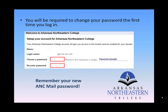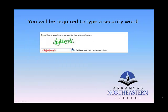Once that information is entered, you will come to the required setup page. To set up your account, you will have to choose your own password. Type the password in the Choose a Password box and also in the Re-Enter Password box. The password must be at least six characters in length. Remember this password because the last six digits of your ID will no longer work after you pass this page. After choosing a password, you will need to type in a security word. This word changes, so don't try to remember it — simply look at the security word, the gibberish, that you have on your screen and type those letters in the box provided.